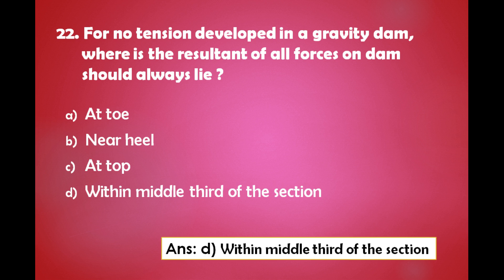For no tension developed in a gravity dam, where should the resultant of all forces on the dam always lie? A) At toe, B) Near heel, C) At top, D) Within middle third of the section. The answer is: for no tension developed in a gravity dam, the resultant of all forces on the dam should always lie within the middle third of the section.